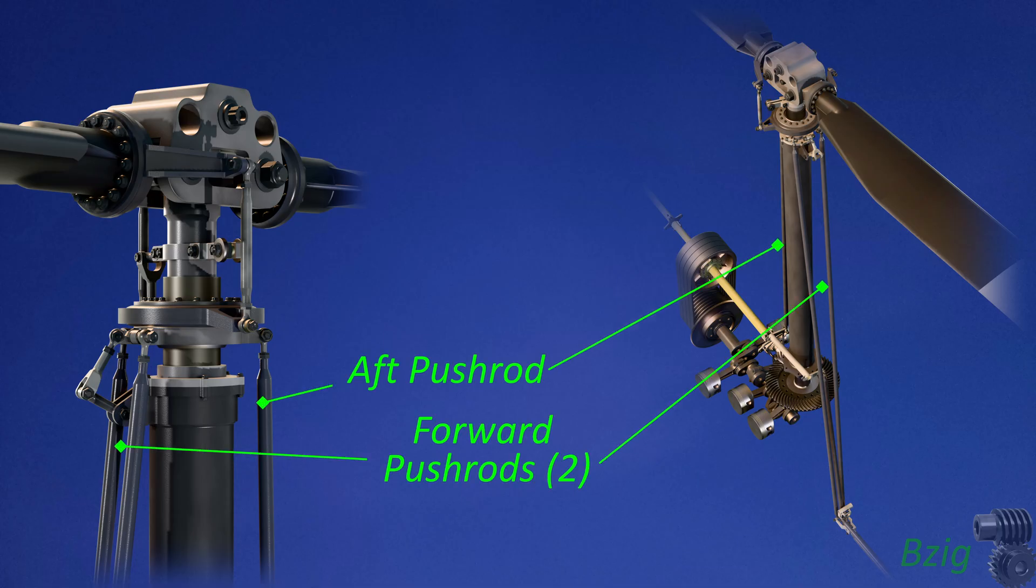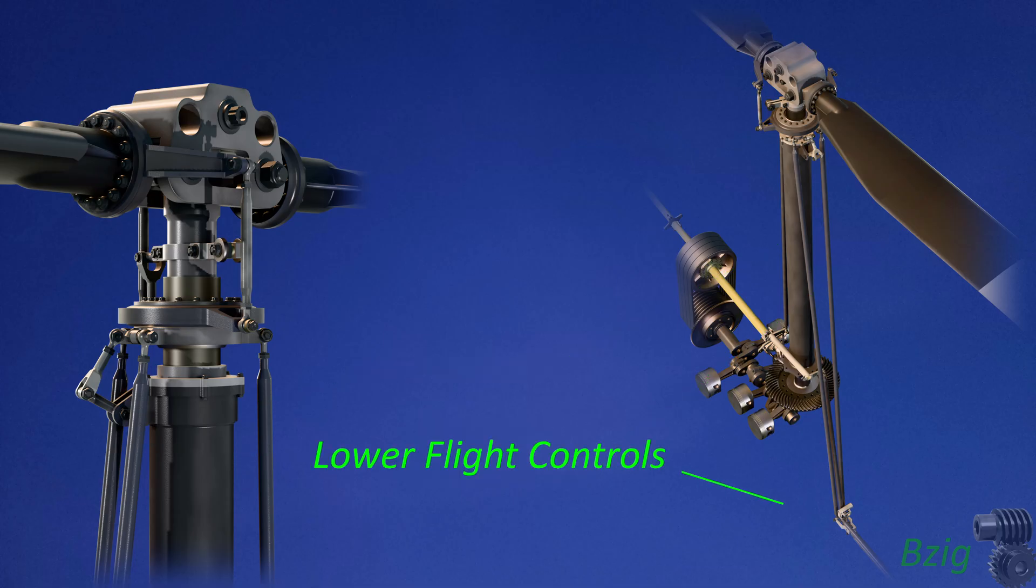These three control push rods extend to the lower flight controls, the forward push rods directly to the lower controls, and the aft push rod via the jackshaft tube.